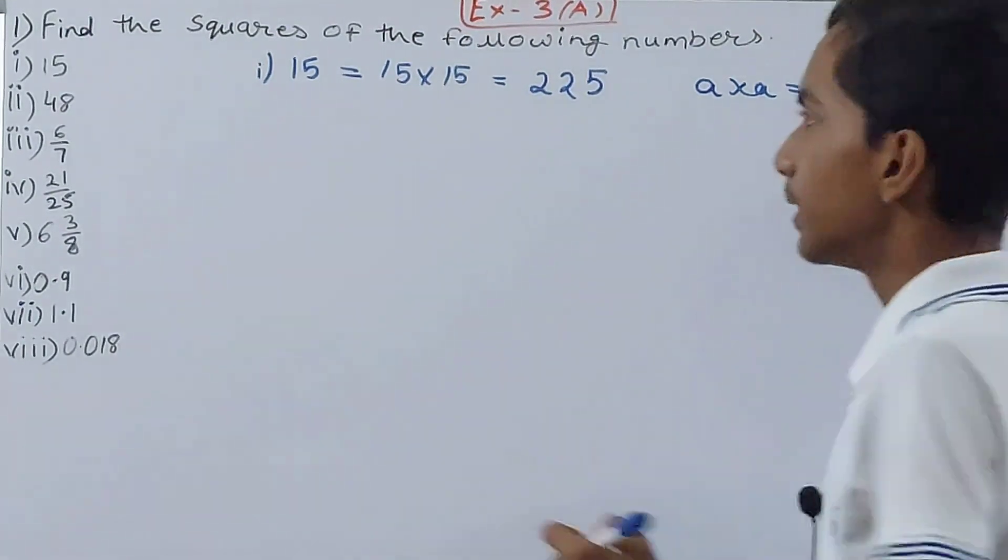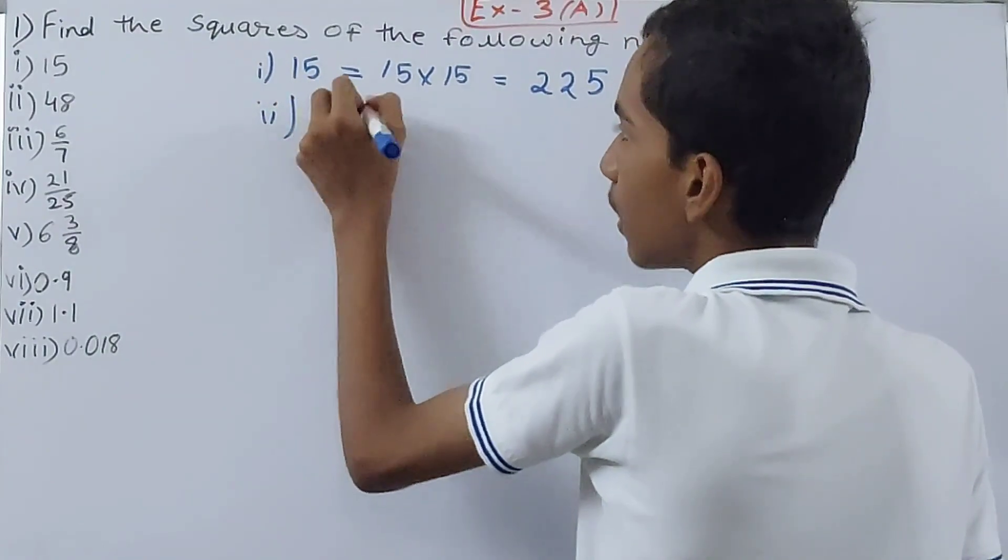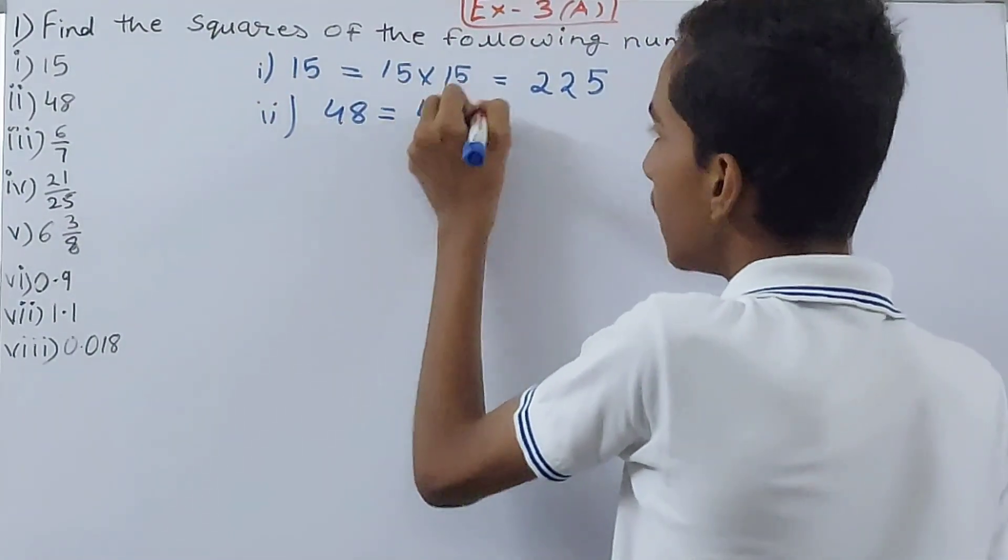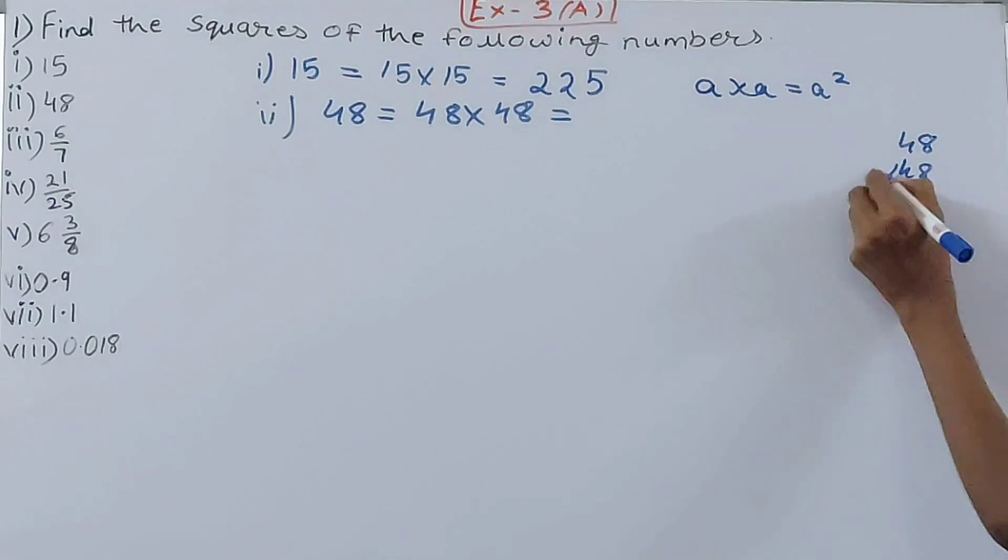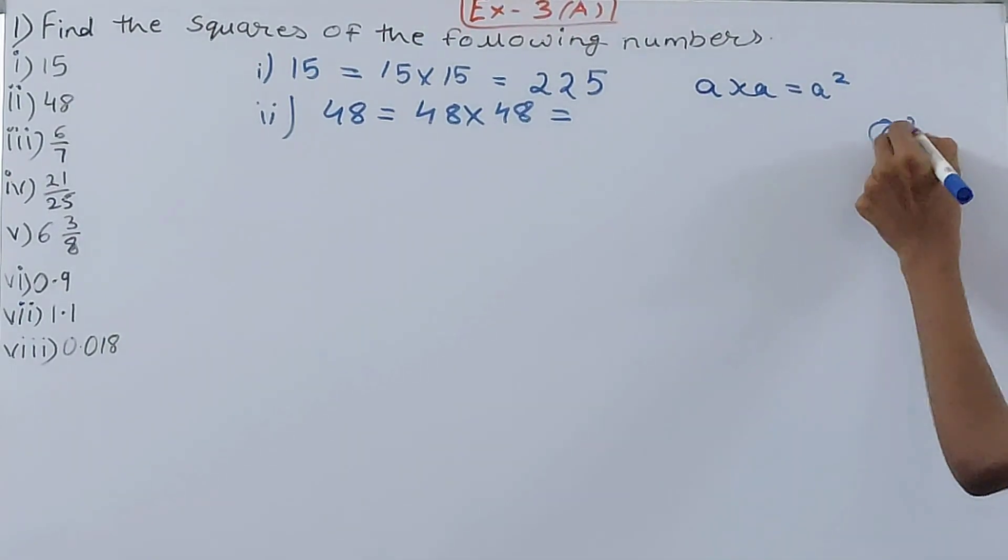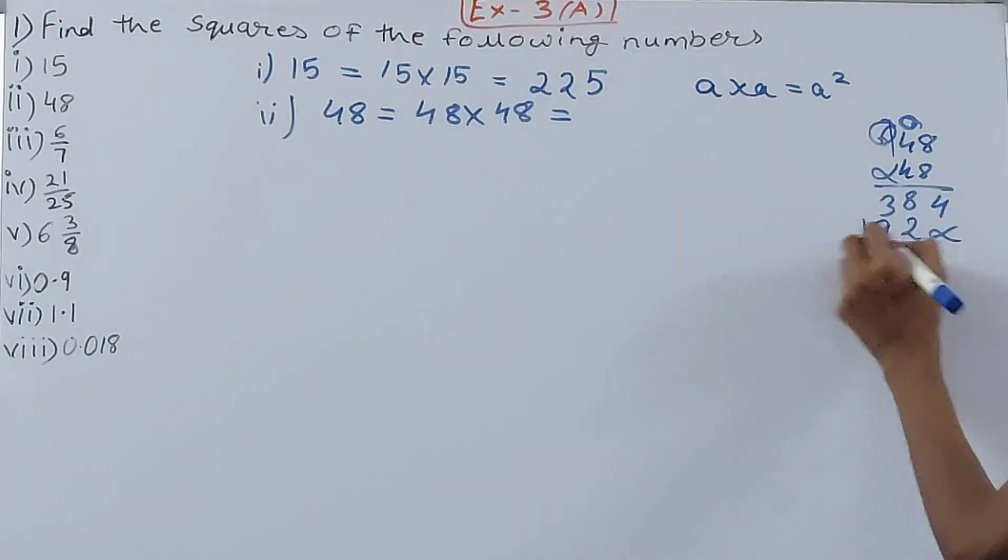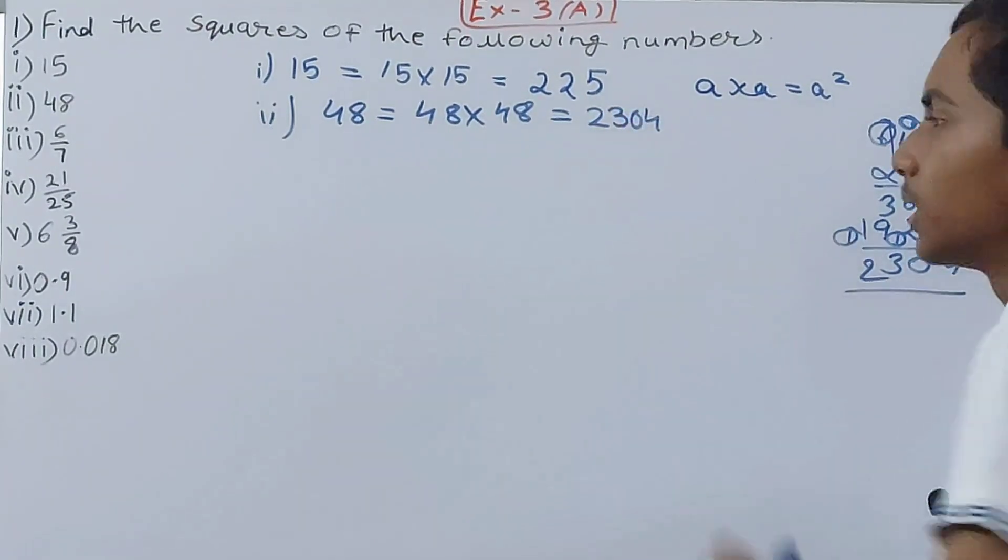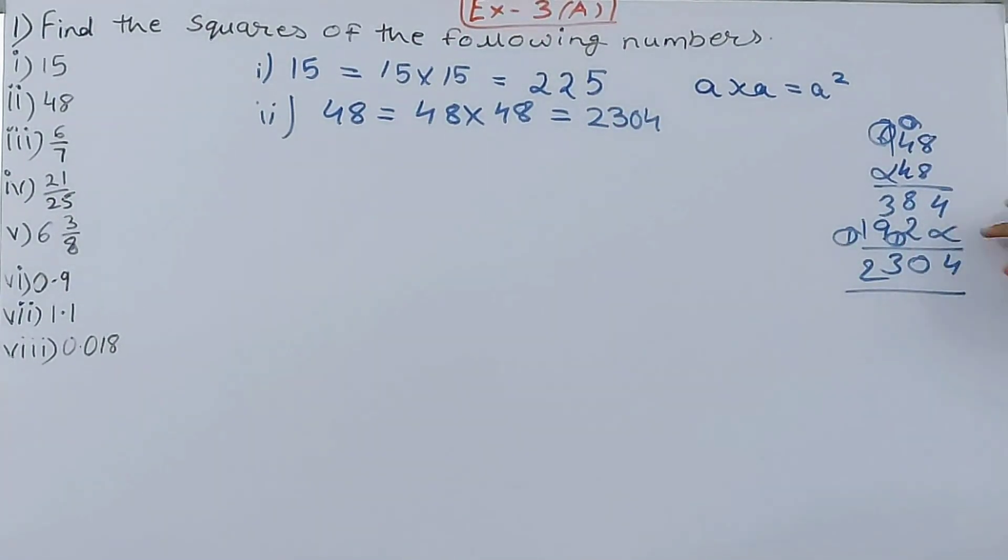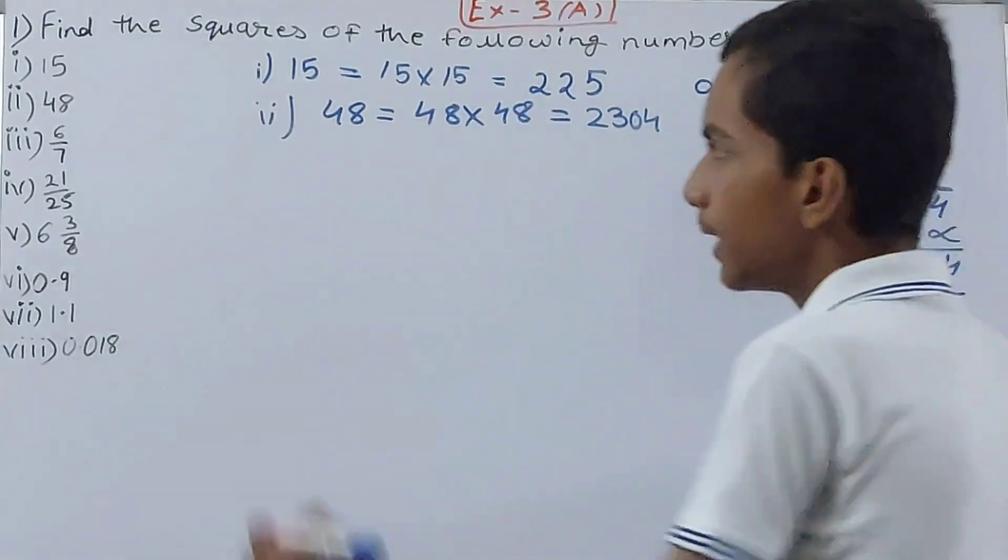Then we have 48, which becomes 48 into 48. Let's do this multiplication: 48 and 48. 8 into 8 is 64, so 4 and 6 carried over. 8 into 4 is 32 plus 6 is 38. 4 into 8 is 32, and 3 carried over. 4 into 4 is 16 plus 3 is 19. So we get 2304. This becomes the square of 48. You can check: 4 plus 0 plus 0 is 4, 0 plus 3 is 3, so 2304, that is correct.